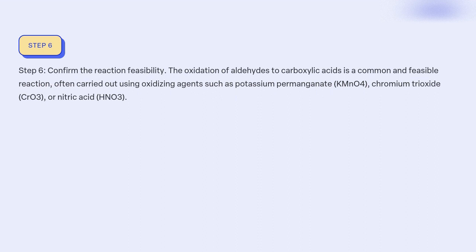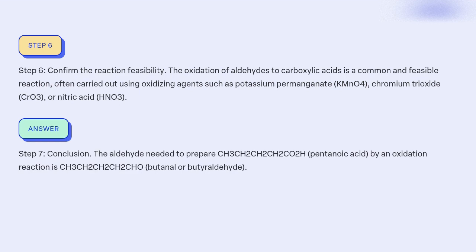Step 6: Confirm the reaction feasibility. The oxidation of aldehydes to carboxylic acids is a common and feasible reaction, often carried out using oxidising agents such as potassium permanganate (KMnO4), chromium trioxide (CrO3), or nitric acid (HNO3). Step 7 Conclusion: The aldehyde needed to prepare CH3CH2CH2CH2COOH (pentanoic acid) by an oxidation reaction is CH3CH2CH2CH2CHO, butanal or butyraldehyde.